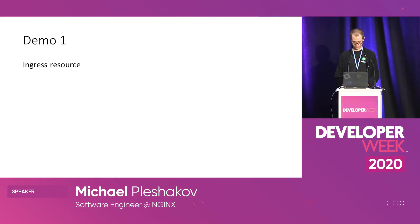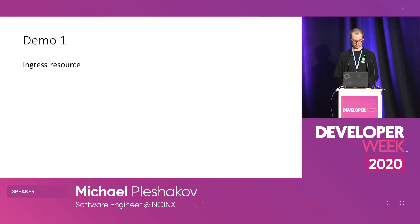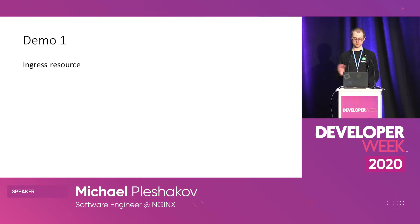Let me show you the first demo: how the ingress resource works in action. We'll configure load balancing for a simple web application. I have a Kubernetes cluster running in Google Cloud. Running kubectl get nodes, you can see I have three nodes in my cluster. I've also deployed the NGINX ingress controller in the namespace nginx-ingress. We have one pod and a service that exposes the ingress controller to the outside of the cluster, with a cloud-provisioned external IP. Hitting that IP with curl, we get a 404 Not Found from NGINX.